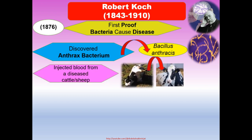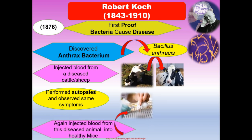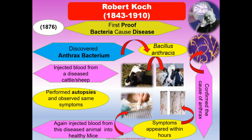He injected blood from diseased cattle or diseased sheep, performed autopsies, and observed the same symptoms. Again, he injected blood from the diseased animal into healthy mice, and the symptoms appeared within hours. Finally, Koch confirmed the cause of anthrax as the bacterium Bacillus anthracis.